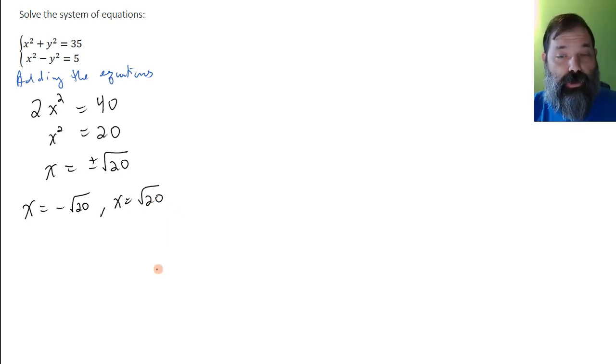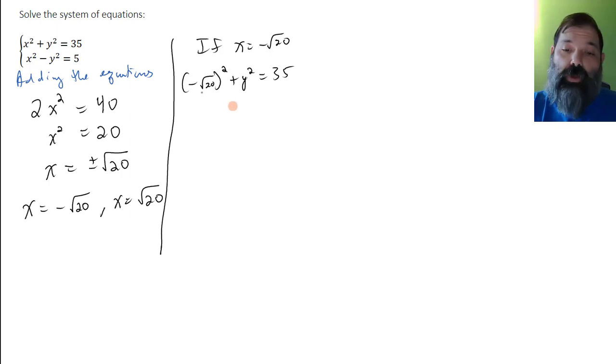But I haven't solved the system yet. Now I'll take each of those values and substitute into one of the equations to solve for y. If x equals negative square root 20, using the first equation: negative square root 20 squared plus y squared is 35. Since a negative number squared is positive, we get 20 plus y squared equals 35. So y squared is 15, meaning y is the positive or negative square root of 15.